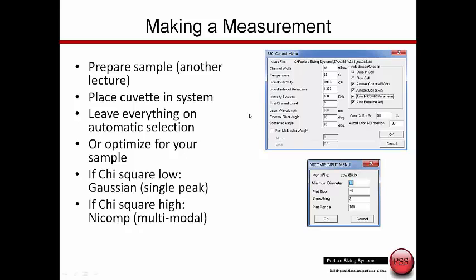Taking a measurement is very easy with the NICOMP. We simply prepare the sample, which is sometimes simple, sometimes a little more complicated. We place the cuvette in the system and looking at the setup screen, we could either leave everything on automatic in terms of baseline NICOMP parameters and choosing the neutral density filter, or we could adjust this for specific applications.